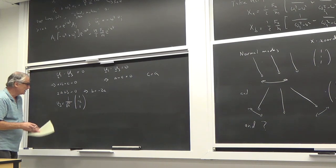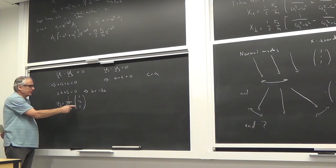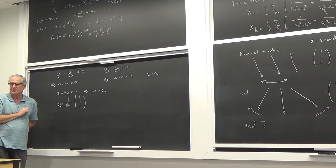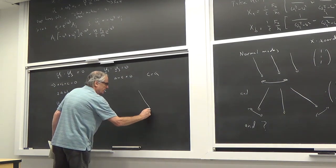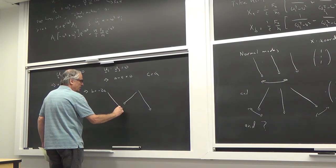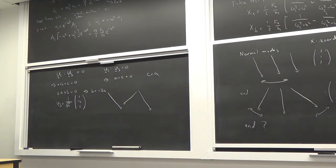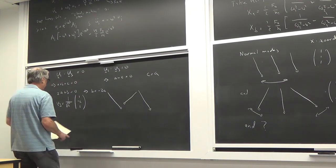That's the third normal mode: if mass a is moving this way, mass b is moving in the opposite direction with twice the amplitude, and mass c is moving the same as mass a. That mode sloshes back and forth keeping these relationships without coupling to the other modes.